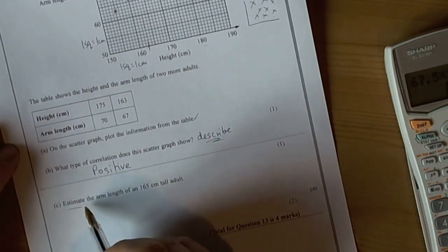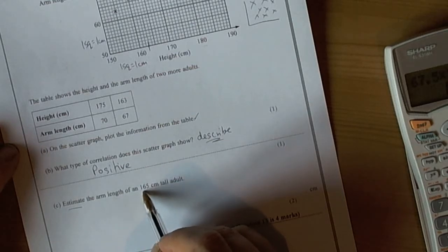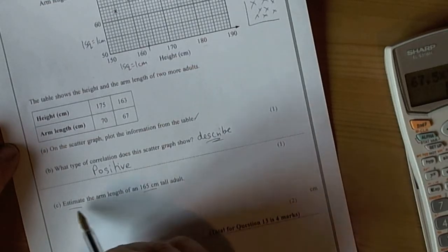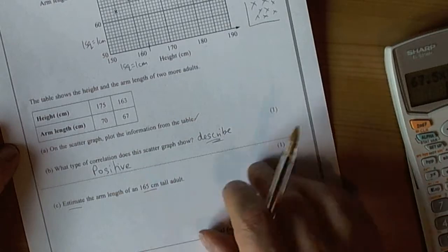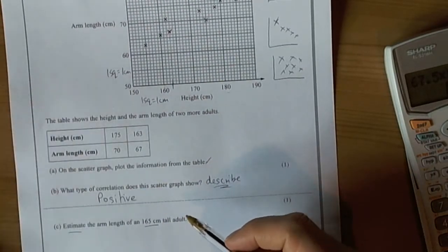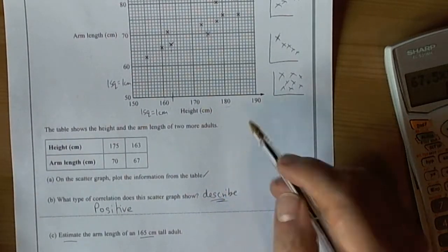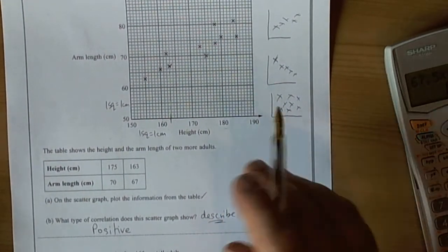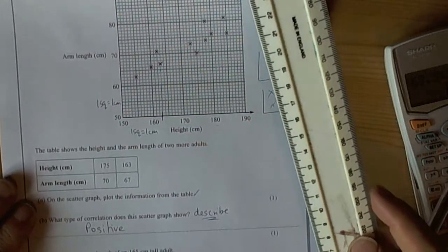The last part of this question says estimate the arm length of a 165cm tall adult. Now estimate doesn't mean just kind of guess what it looks about. You should really use some mathematical skills here. And with all graph questions when you interpret them, then the best thing to do is draw on, particular on a scatter graph, is a line of best fit.